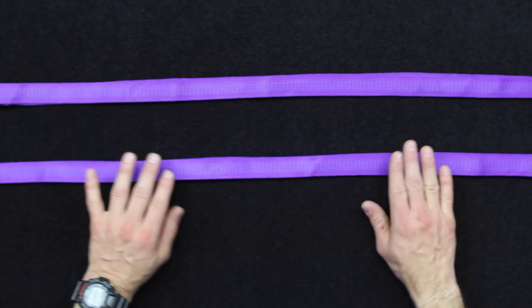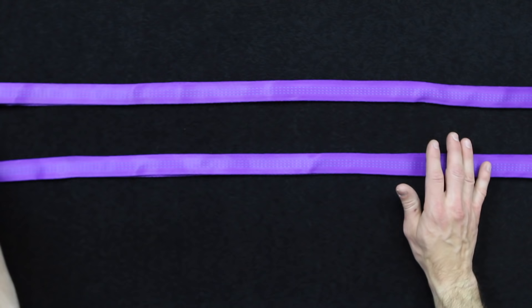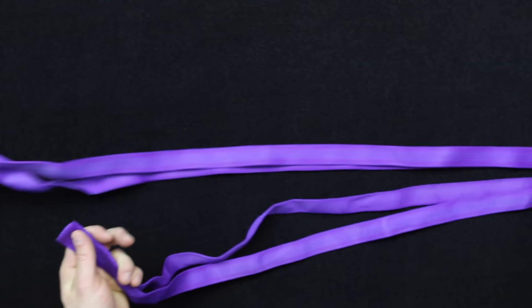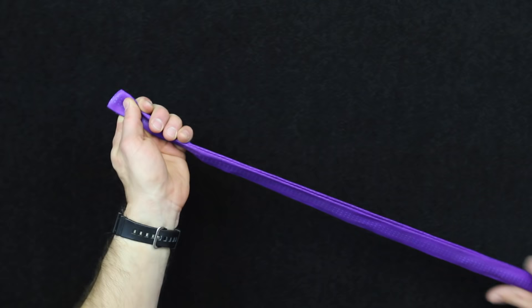The first step in tying an etrier is to source a piece of tubular webbing. This is one inch tubular webbing, and what we've got here is about a 20 foot section. Then you're going to find the midpoint. Once you find the midpoint, grasp your ends of the tubular webbing.